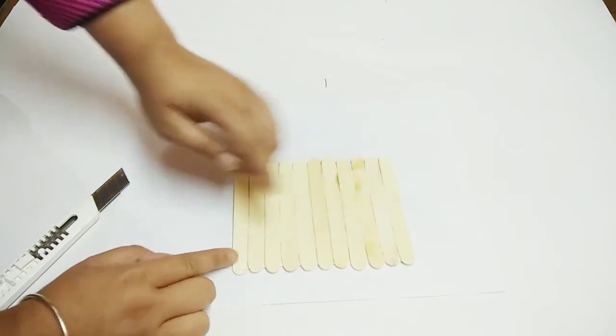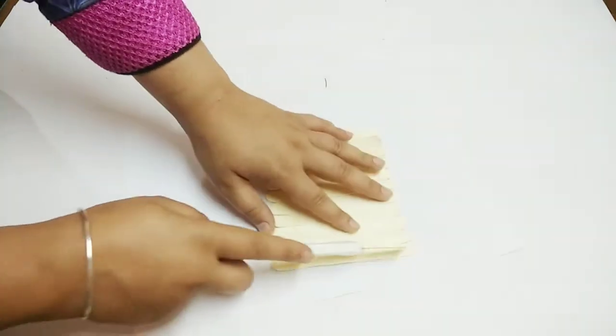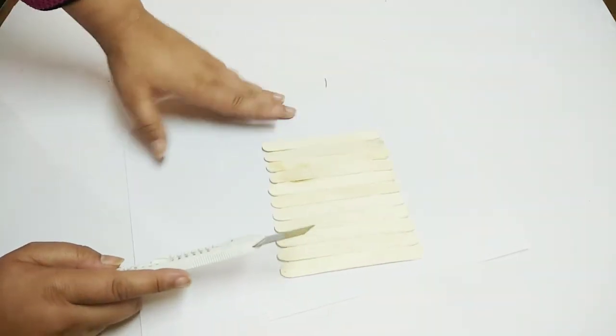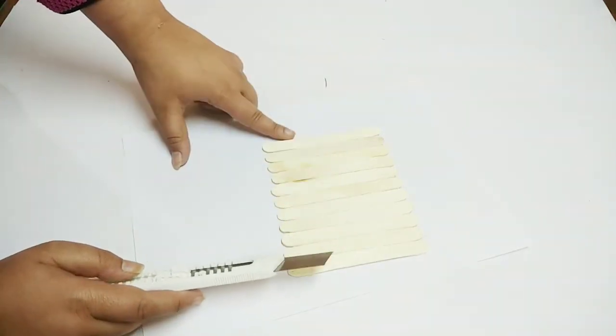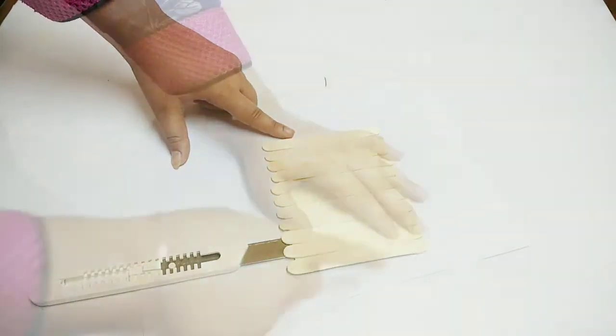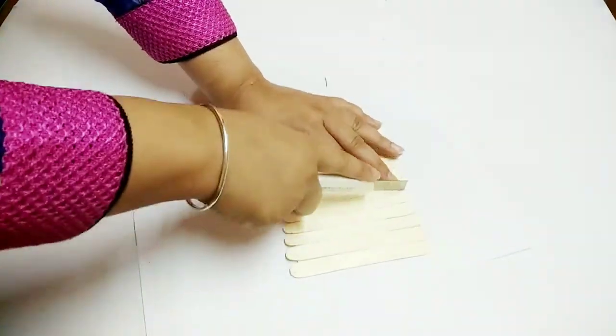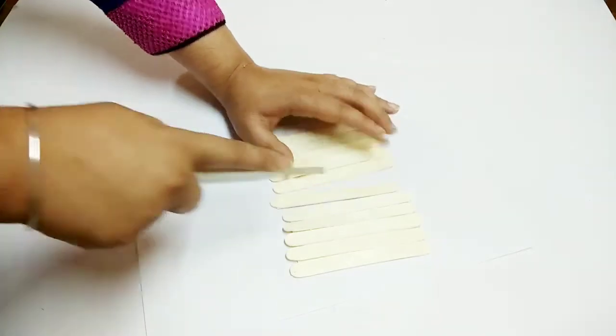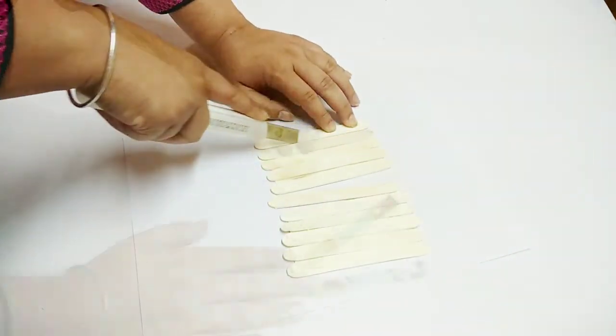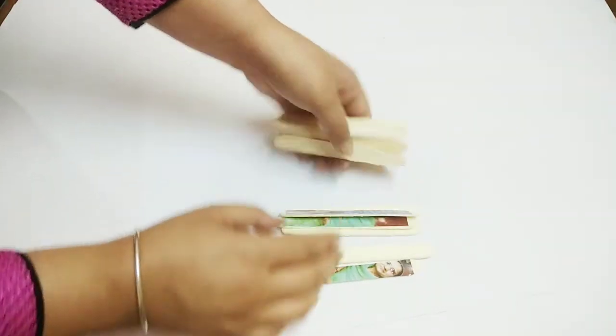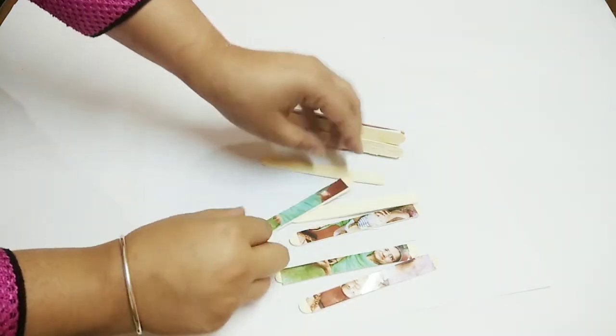Now turning it, using a cutter you will have to cut all sticks so we will just cut all of these now. So we have cut all of these. Now when you twist it, your photo is changed into a puzzle.